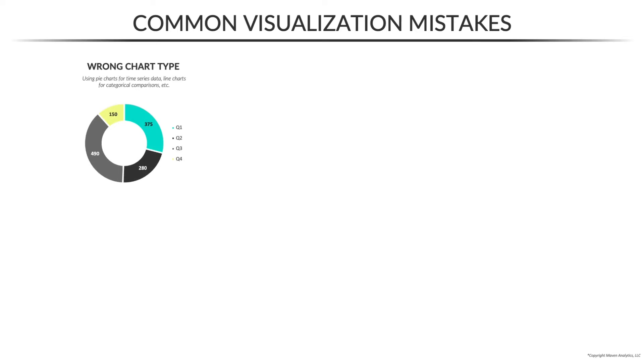First up: using the wrong chart type. Super common mistake — we often see people using line charts to show categorical comparisons, or tree maps when a simple bar chart would be ideal.